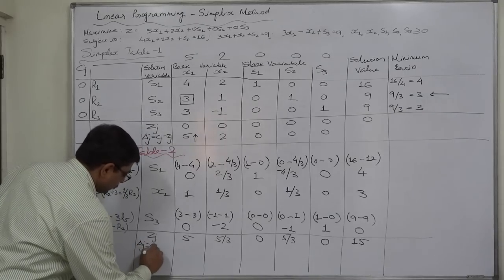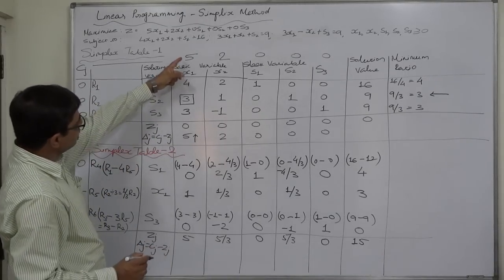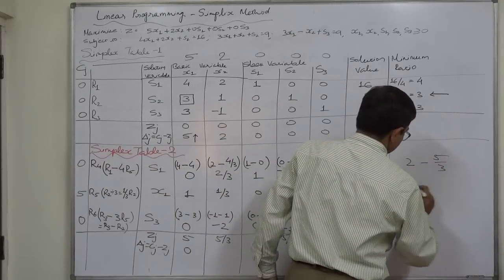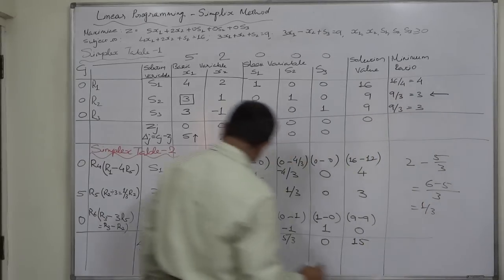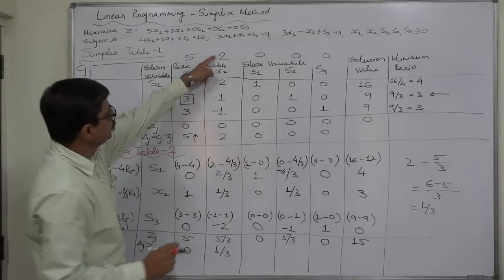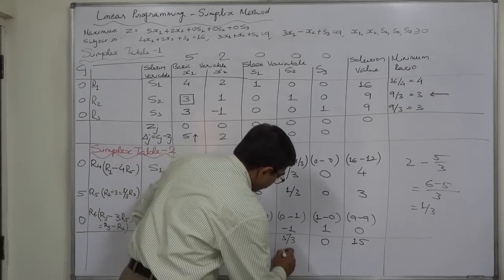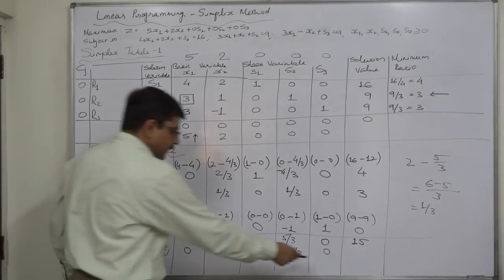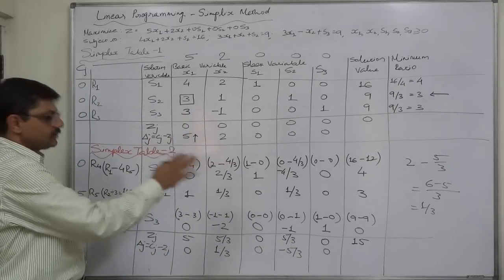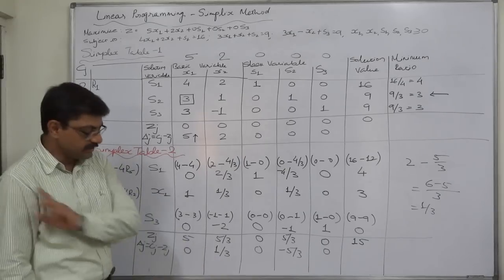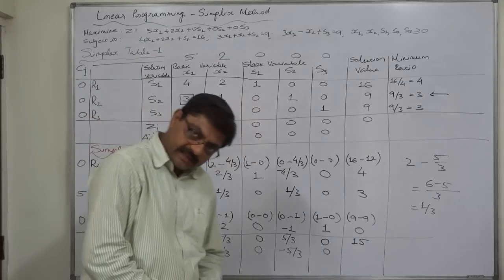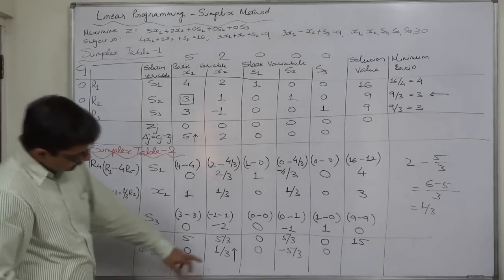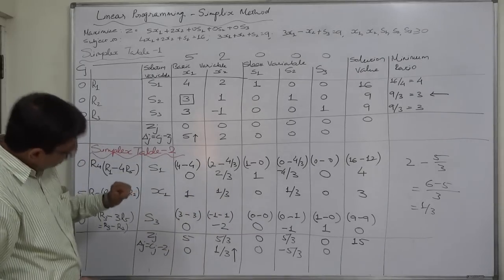Now let us find the delta J values: CJ minus ZJ. 5 minus 5 is 0. 2 minus 5/3 gives 1/3 positive. 0 minus 0 is 0. 0 minus 5/3 is minus 5/3. 0 minus 0 is 0. Since this is a maximization problem, all delta J values must be 0 or negative for an optimal solution. But we still have a positive delta J value of 1/3, so this is not optimal and we need simplex table 3. We select the highest delta J value — 1/3 — so column X2 becomes the key column.